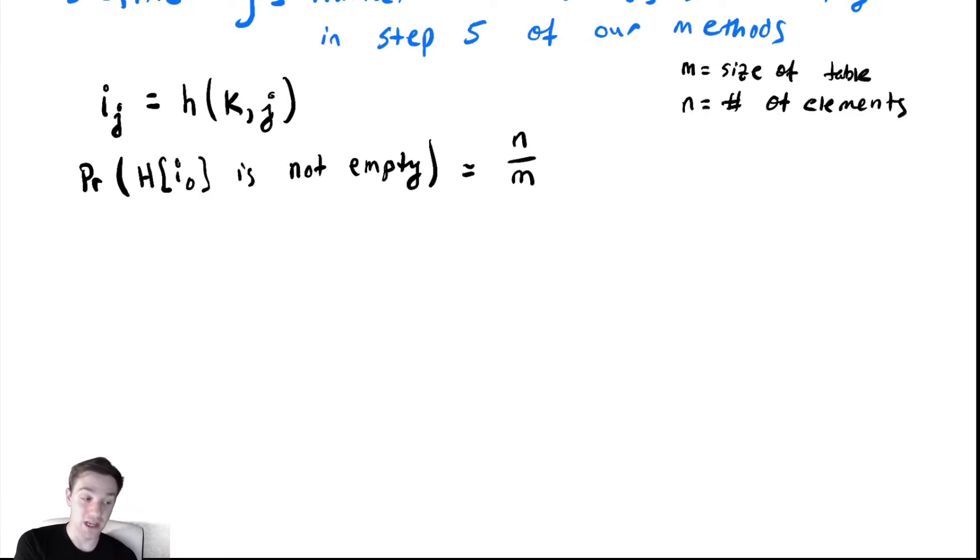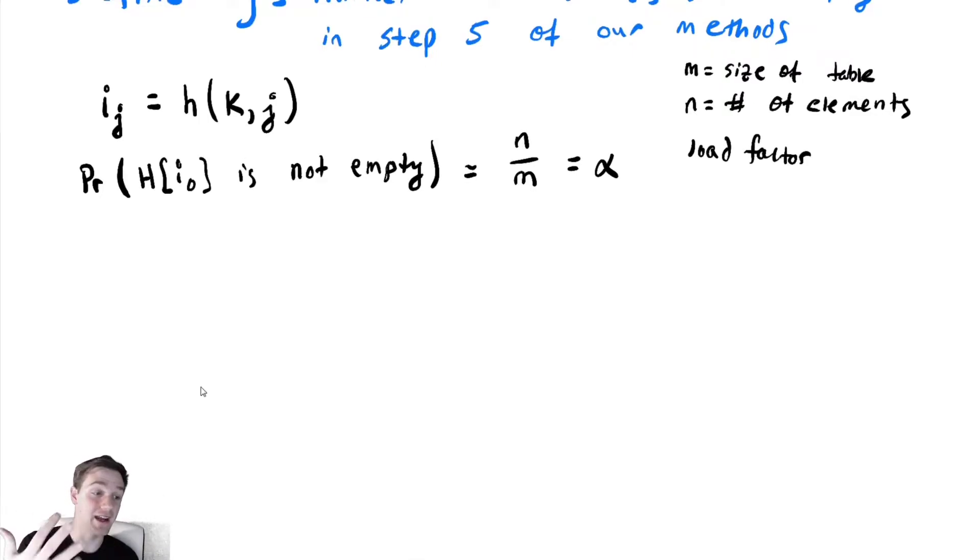If I have a hash table of size m with n elements inserted, and the hash function is chosen intelligently so all locations are equally likely, there are n occupied locations out of m total places. If 10 locations are occupied out of 15 total, this would be 10/15. This is sometimes called alpha, the load factor.